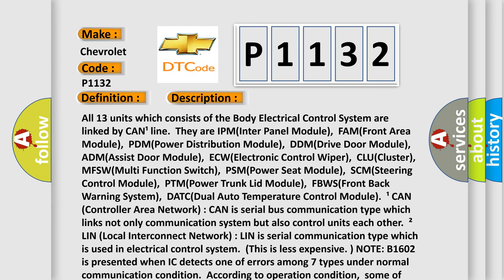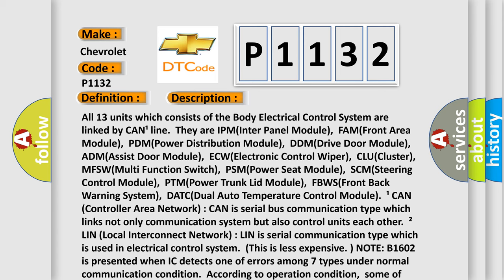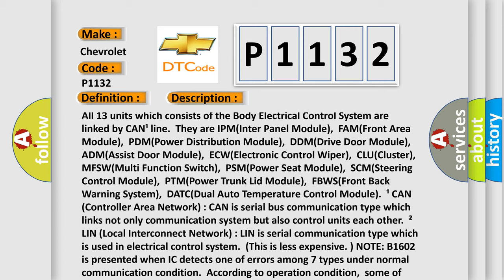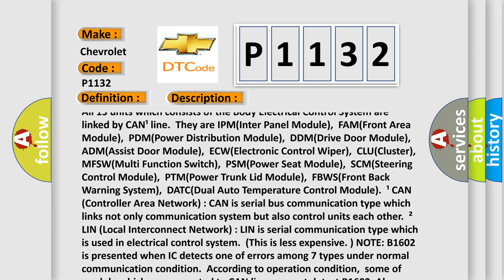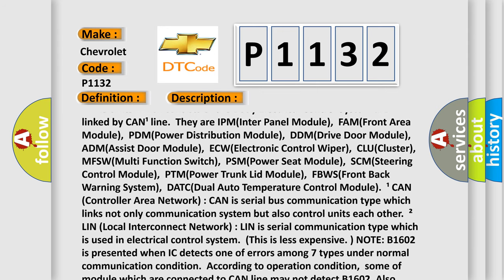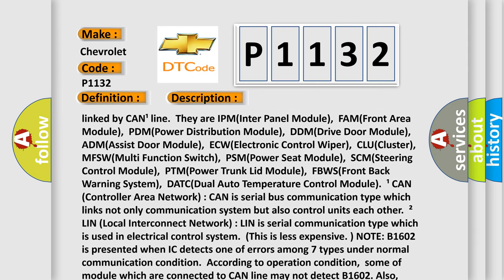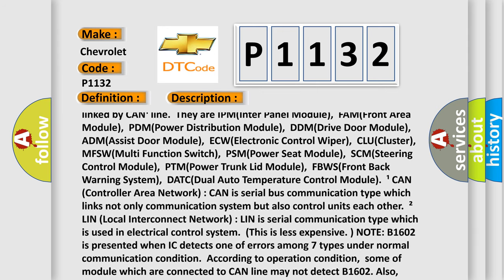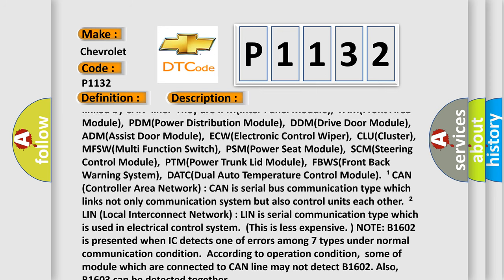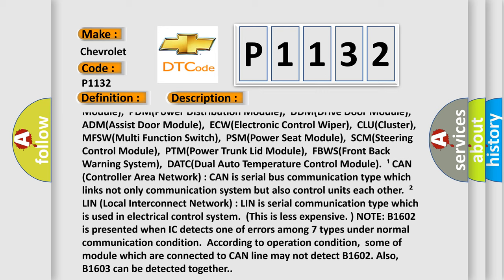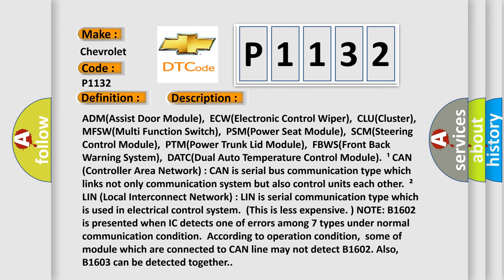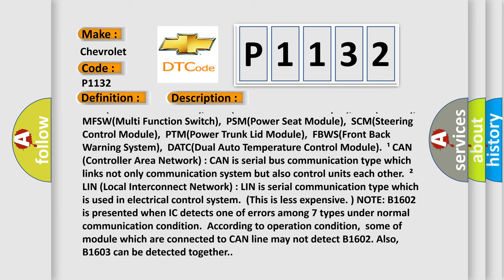All 13 units which consist of the body electrical control system are linked by CAN line. They are: IPM (interpanel module), FAM (front area module), PDM (power distribution module), DDM (drive door module), ADM (assist door module), ECW (electronic control wiper), CLU (cluster), MFSW (multifunction switch), PSM (power seat module), SCM (steering control module), PTM (power trunk lid module), and FBWS (front back warning system).